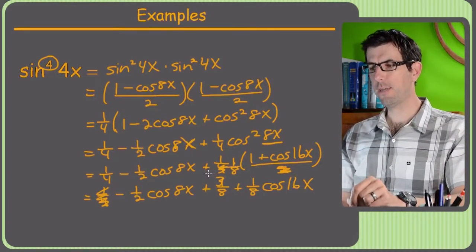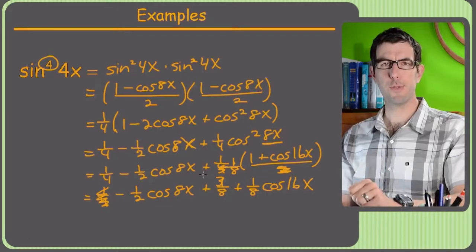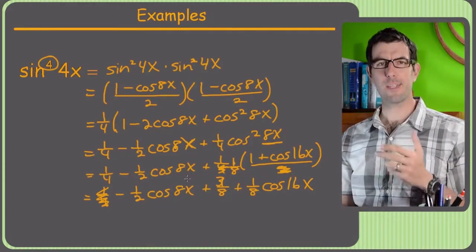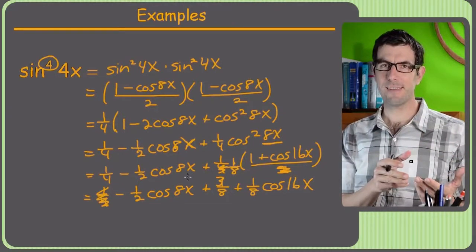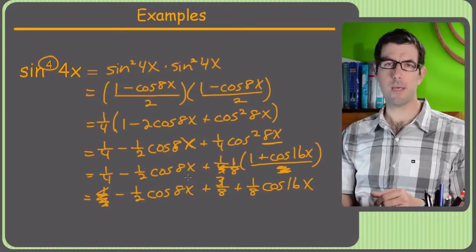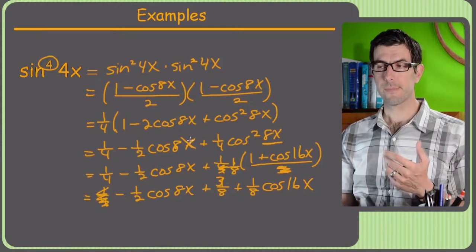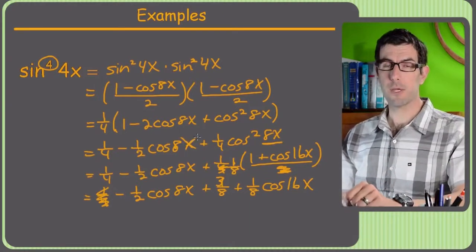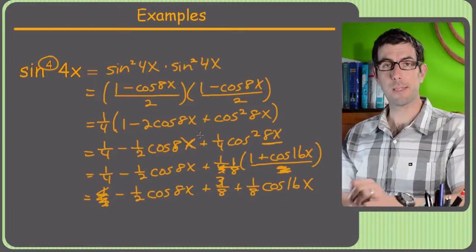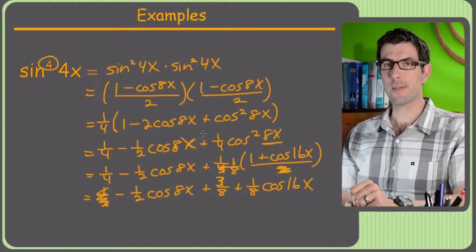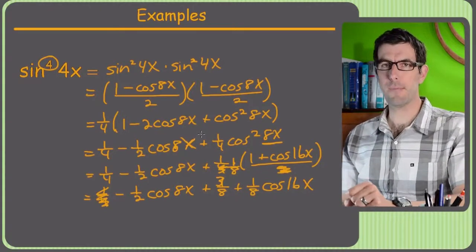All right. So that's pretty much it. Power reducing formula. This, you'll find this useful every once in a while. Probably it's far enough between times it's useful that you'll forget it again before you need it. So that's why it's helpful to be able to derive it from the cosine of 2x formula like I did at the beginning of this video. All right. So stick around. Lots more fun math coming up. Thanks, everybody.